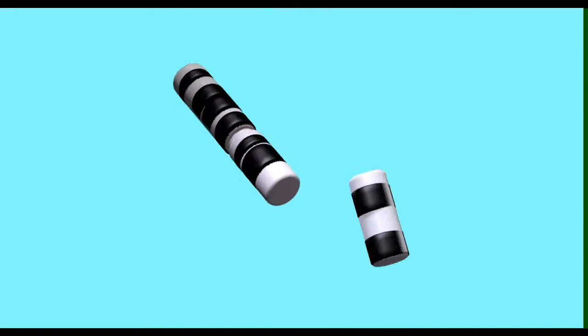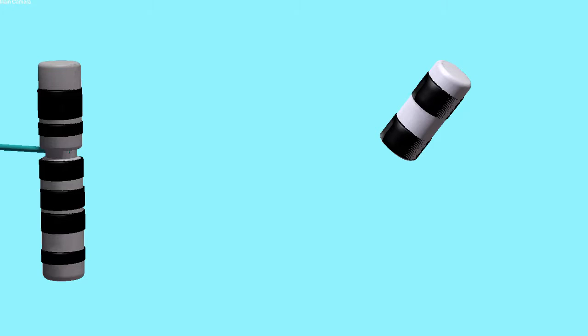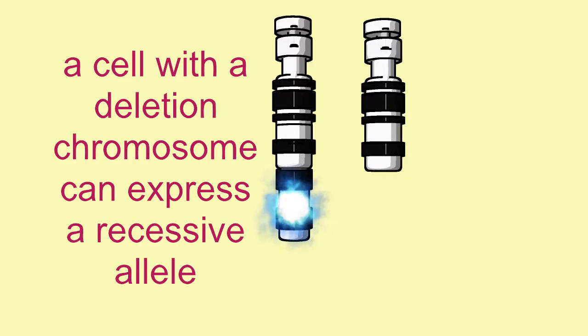The fragment which possesses the centromere is the centric fragment. The fragment without the centromere is the acentric fragment. The centric fragment becomes a deletion chromosome because the future cell will possess only one copy of certain genes.